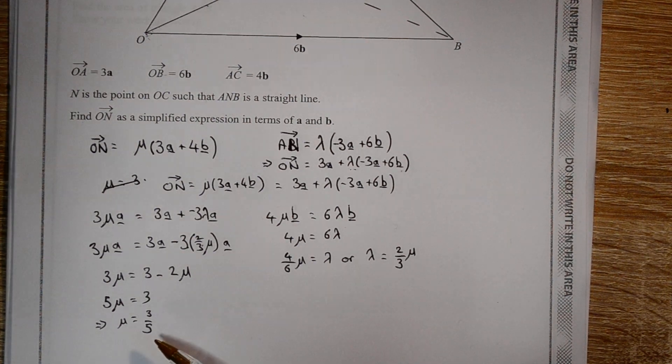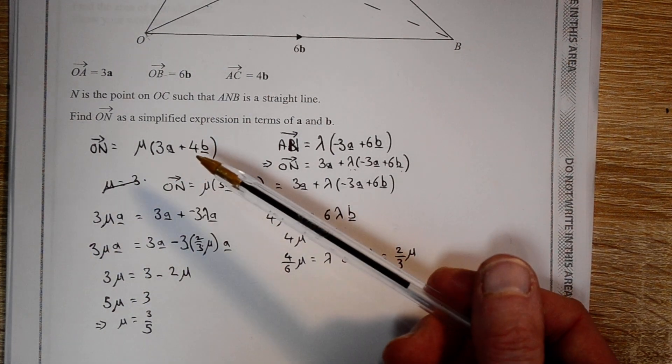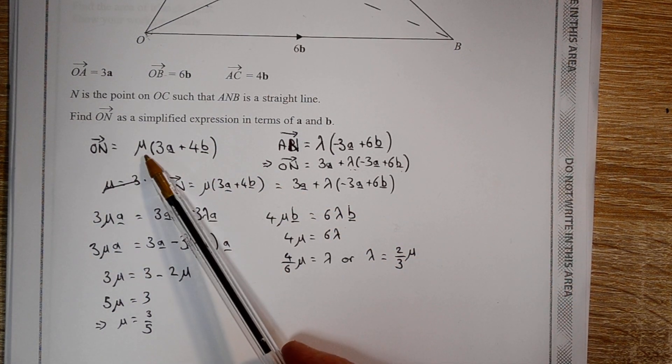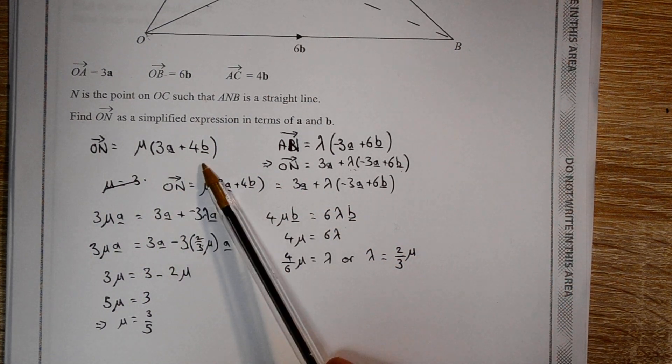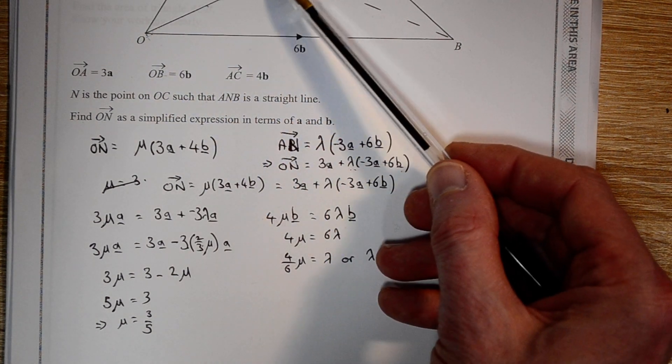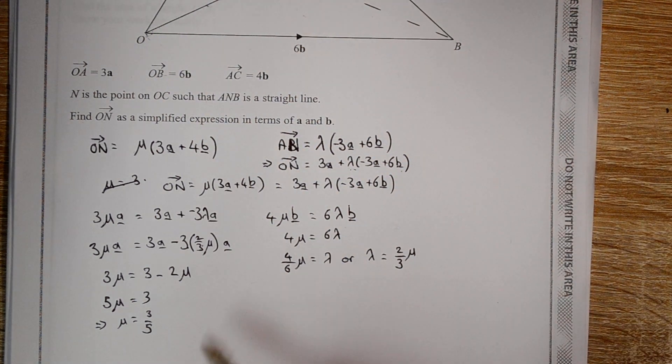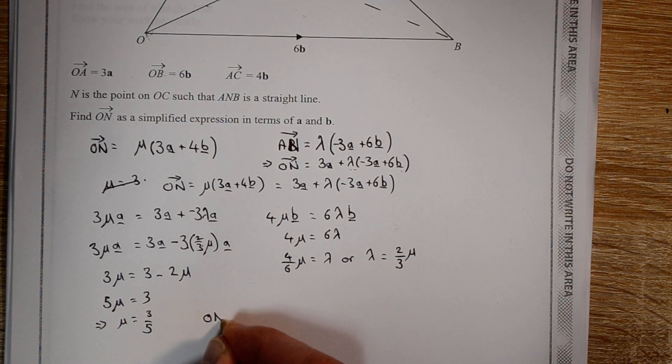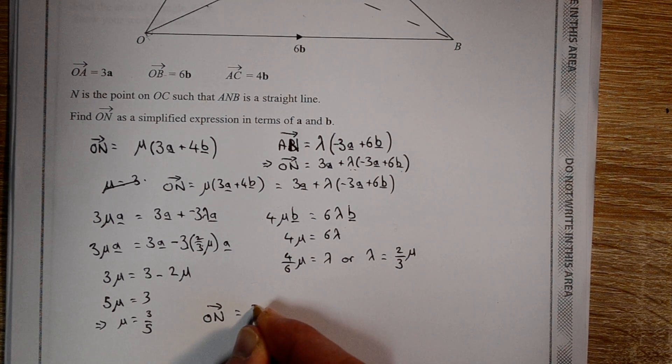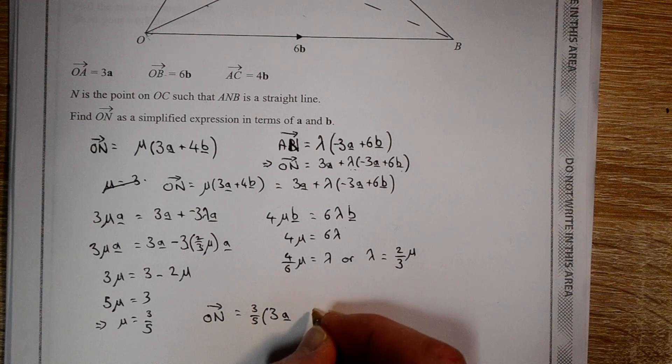So what this is telling us is that the point N is three-fifths of the way along this line, which is the line from O to C. So from O to N is three-fifths of that distance. And so therefore we can say ON equals three-fifths of the vector from O to C.